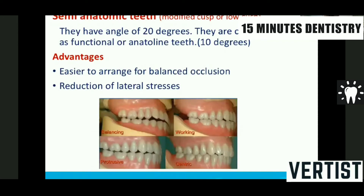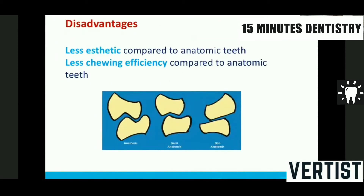Semi-anatomic teeth have 20 degrees angulation and are the most commonly used teeth set nowadays in both pre-clinical and clinical settings. They are easy to arrange in balanced occlusion and reduce lateral stresses. The biggest disadvantage is that they are less aesthetic compared to anatomic teeth because the cuspal tips are rounded and they have less chewing efficiency. Non-anatomic teeth are just flat with a very shallow occlusal surface and reduced cuspal height, giving freedom in lateral and anterior-posterior movement.